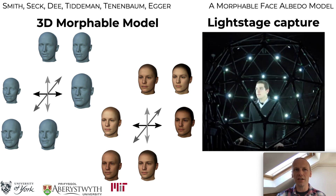A light stage uses polarizing filters and controlled lighting to capture intrinsic diffuse and specular albedo maps. In this paper we present a pipeline for capturing and building an albedo morphable model using a light stage, and release a new model built from our own captured dataset, augmented with a publicly available dataset.